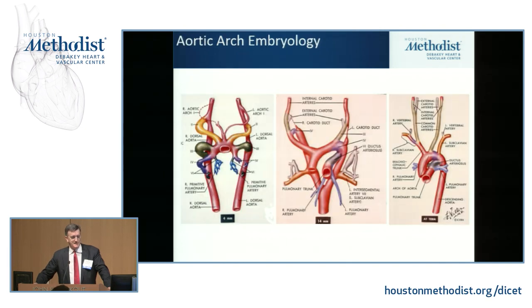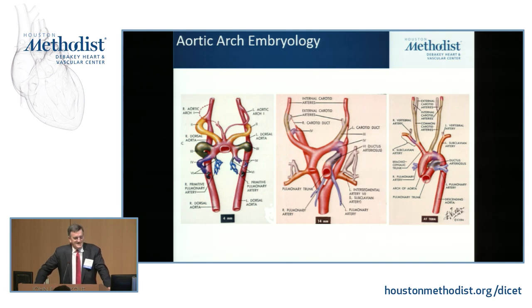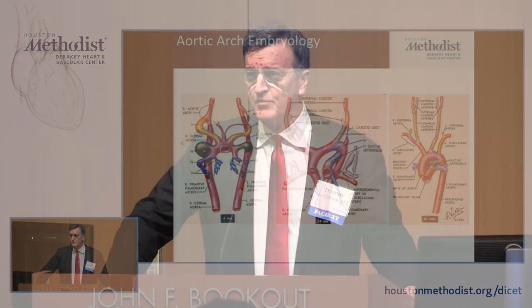Now the dreaded aortic arch embryology slide — this is usually when the eyes roll back and people start to fall asleep. But the take-home message is that the development of our aortas when we're embryos is very complicated. We start out with six branchial arches and end up with one, as a result of involution of most of those arches, and while that's happening you can develop a number of different arch anomalies. It's amazing it doesn't happen more often than it does.